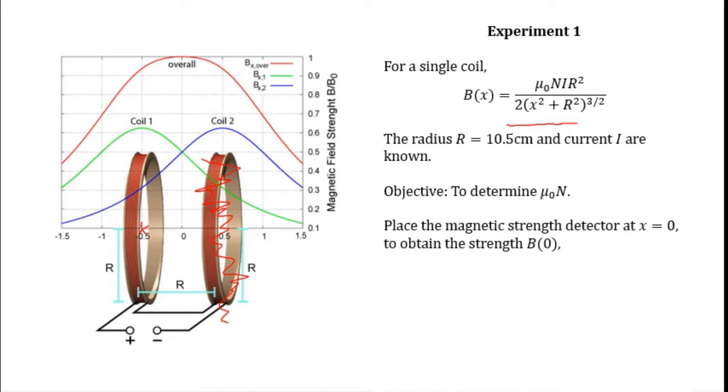Here you have the value of B at x equals zero. The measured value of μ₀N can be obtained by using the following relationship.